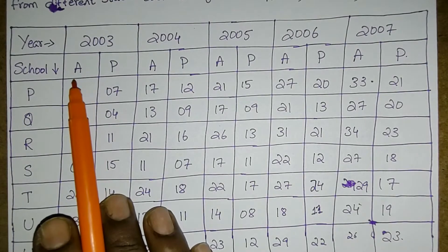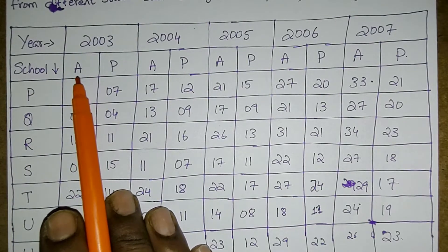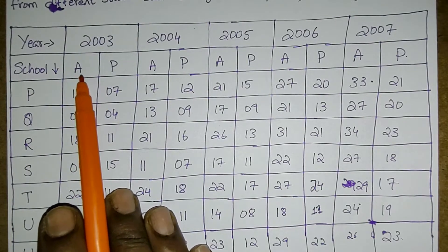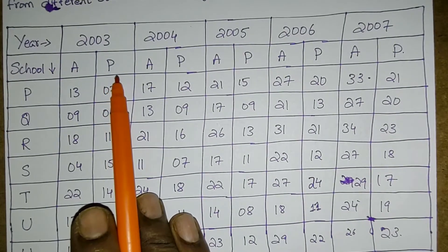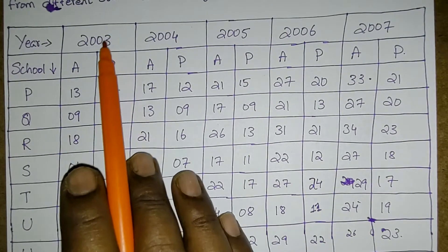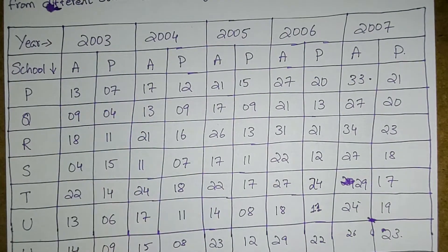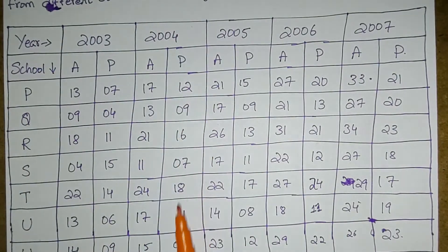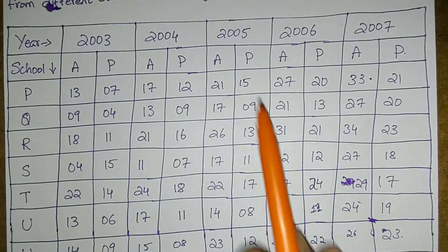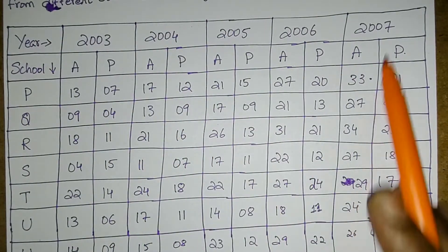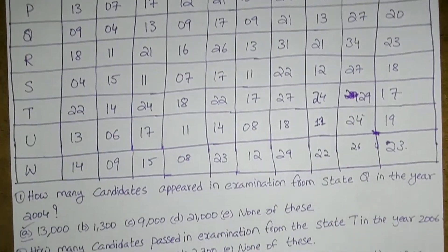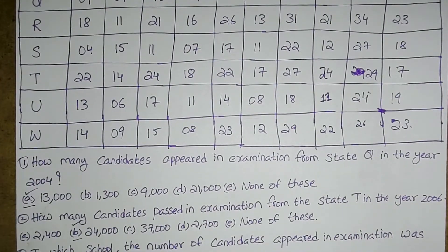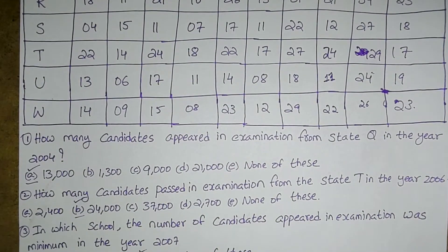A represents appeared and P represents passed. For 2003, 2004, 2005, 2006, and 2007 this is the given data. Now we will see the questions and how we can write the answers in today's class.